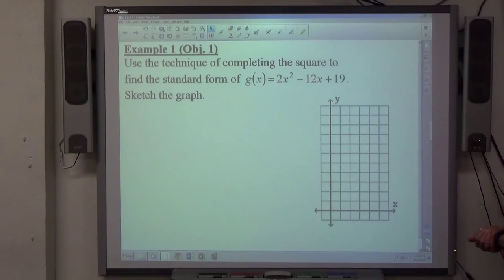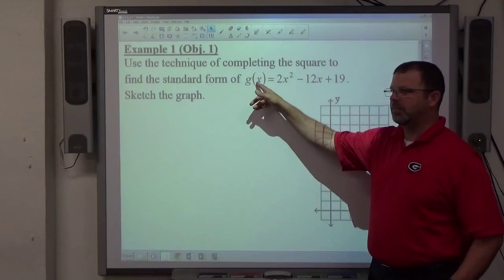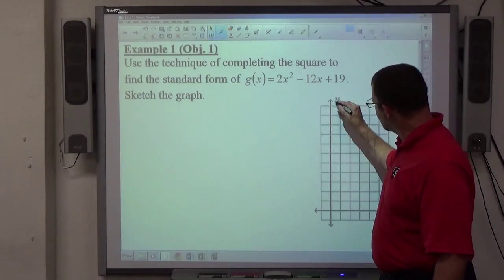Okay, for example one, I'll use the technique of completing the square to find the standard form of g(x) equals 2x squared minus 12x plus 19. g(x), y in disguise.